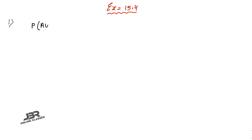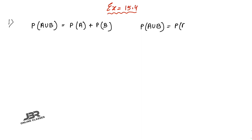Problem number one: if P(A∪B) equals P(A) plus P(B), what can be said about events A and B? The formula for P(A∪B) is P(A) plus P(B) minus P(A∩B). But in the question, P(A∪B) equals P(A) plus P(B).